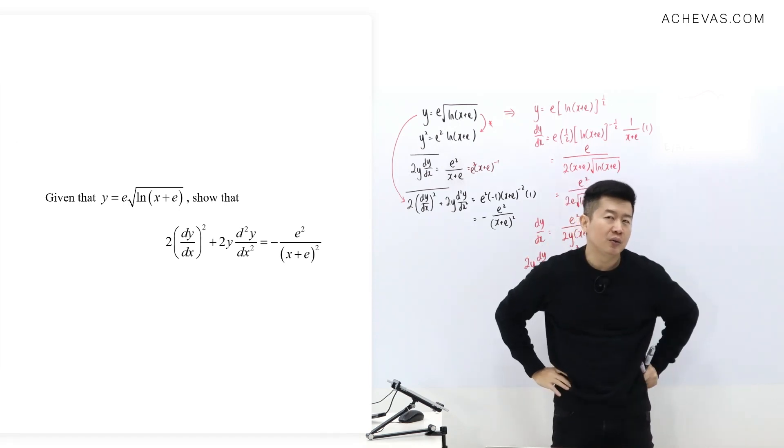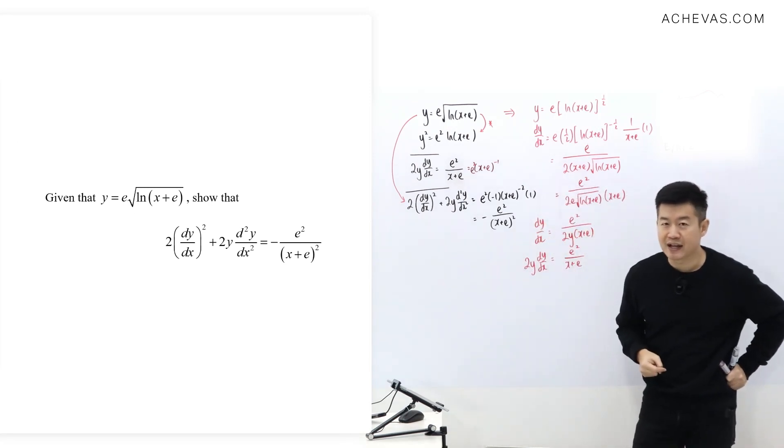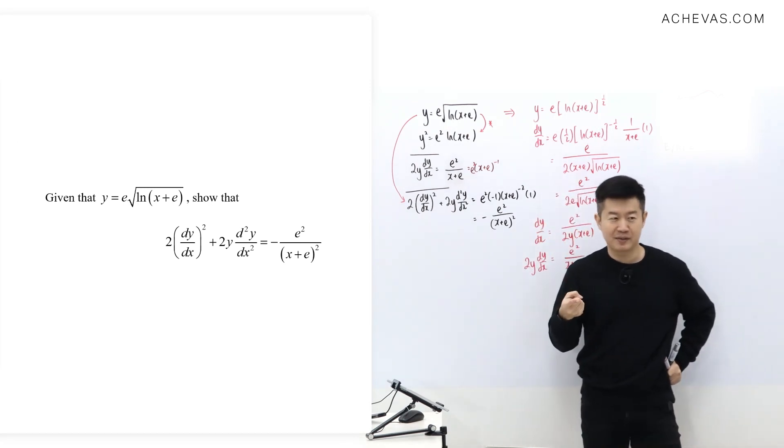You can't really ask people: How do you know when do you know that you're going to square on both sides? When do you know you're going to log both sides? When do you—how do you know that you're not going to sine both sides? It's very difficult to ask people about this because it is based on the situation.